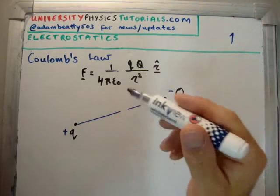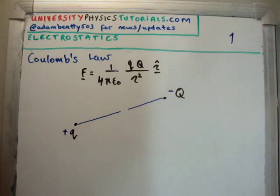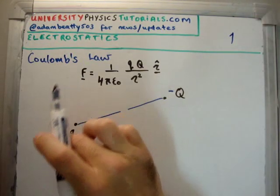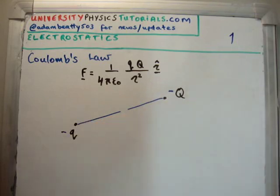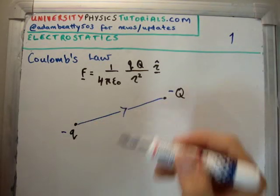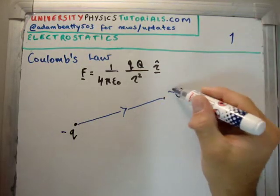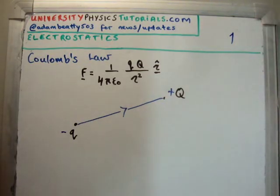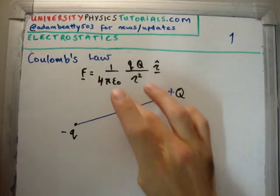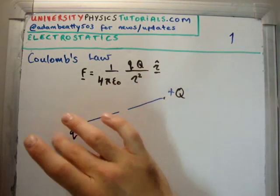So what we're after seeing here is that like charges repel and unlike charges attract, even though I haven't discussed it very well or in great depth. If I have two negative charges, once again the force will point in that direction. And if I put a negative charge on the source and a positive charge on the test, we also have the field will point in a slightly different direction, but it will be attractive either way.